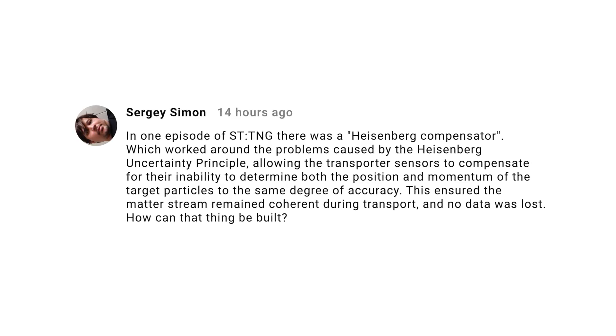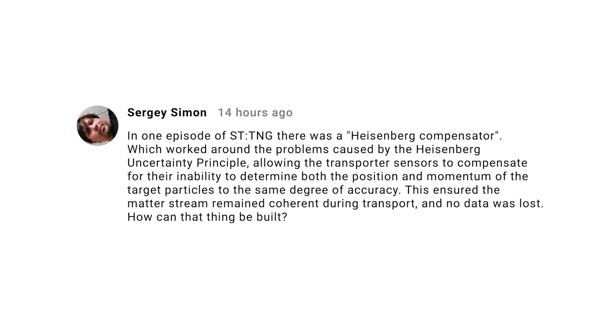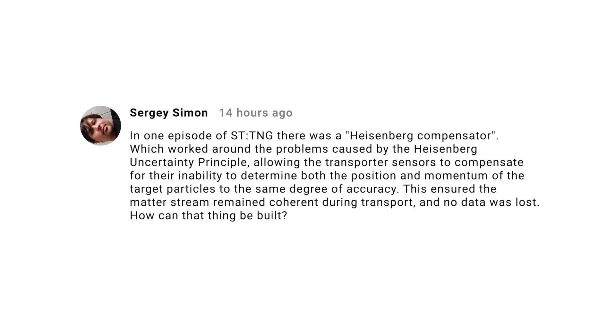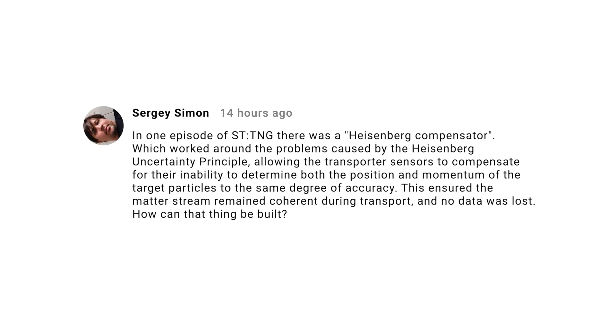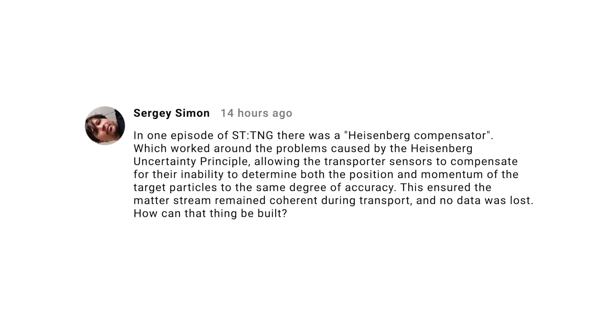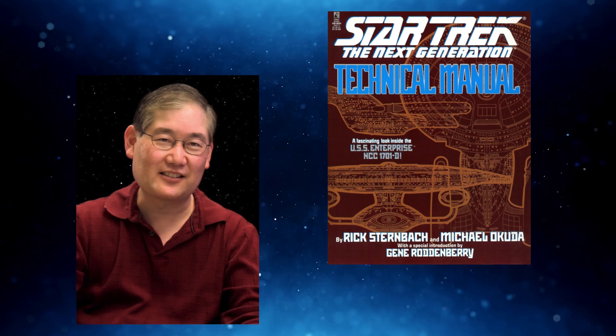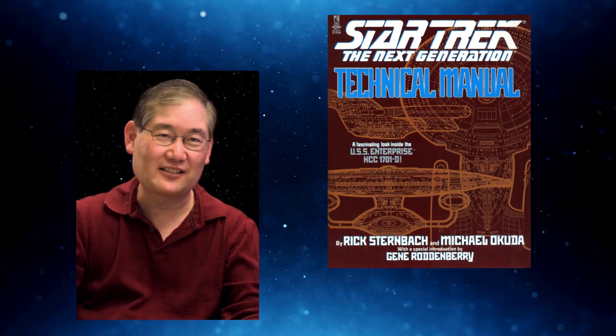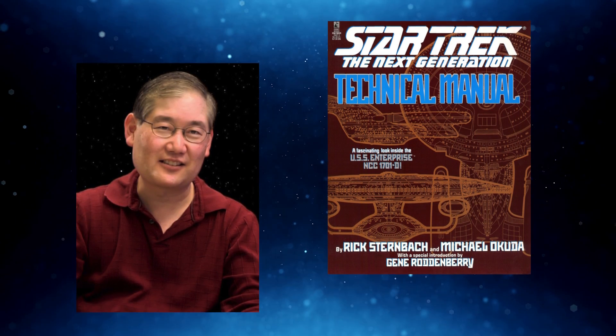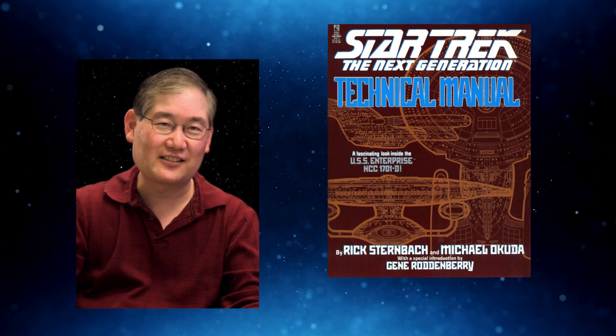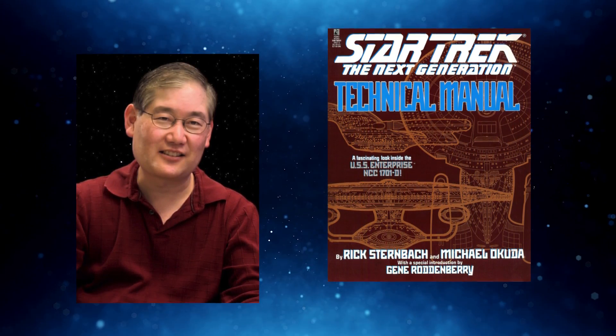Sergei Semen remembers a thing from Star Trek: The Next Generation called the Heisenberg Compensator, which corrected for the effects of the Heisenberg Uncertainty Principle, and asks how it could be built. The short answer is that it can't. However, there is an interesting anecdote: Michael Okuda, a technical consultant for the show, was asked how the Heisenberg Compensator worked. He replied, 'It works very well, thank you.'